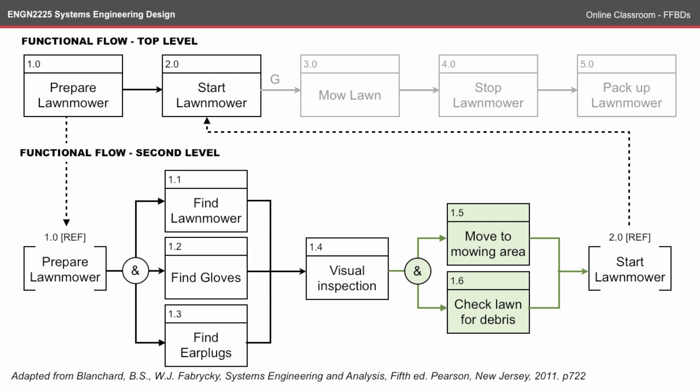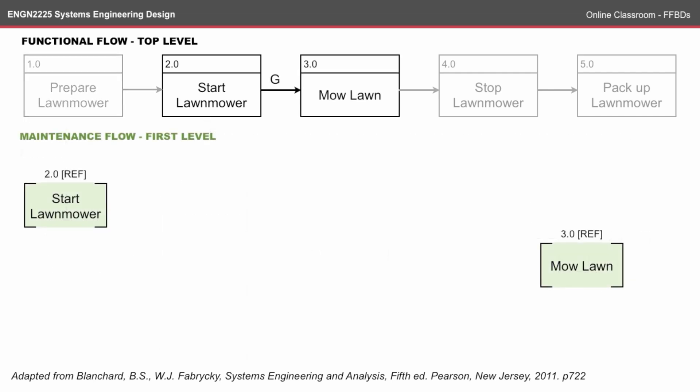So there we have a completed sub-functional second-level flow explaining the steps between step one, prepare lawnmower, and step two, start lawnmower. As mentioned before, there was a go/no-go situation with the start lawnmower step, so we need to do a maintenance flow — describing what happens if the lawnmower doesn't start. This is often used for troubleshooting part of the system if it's not working in the desired way.